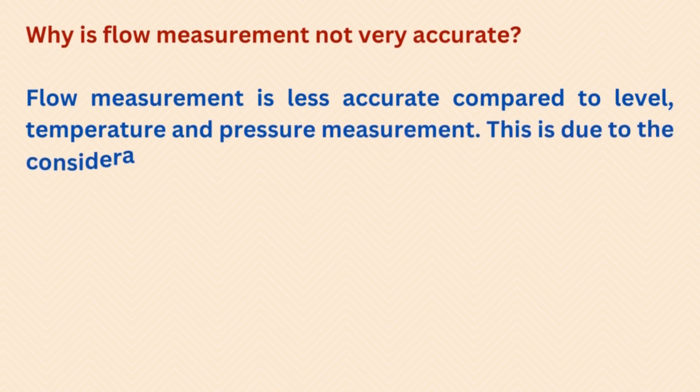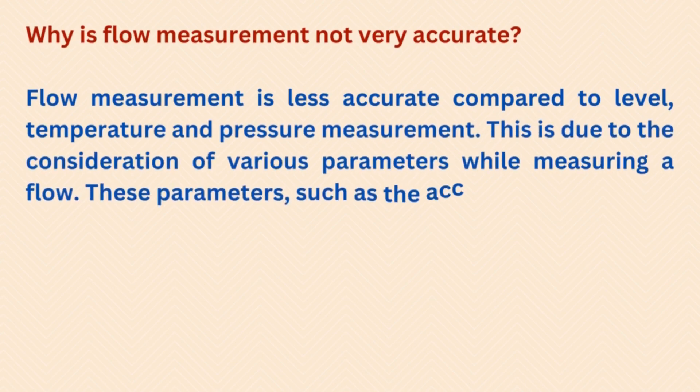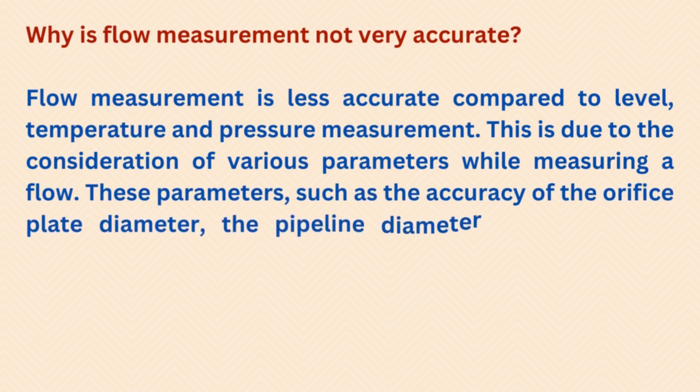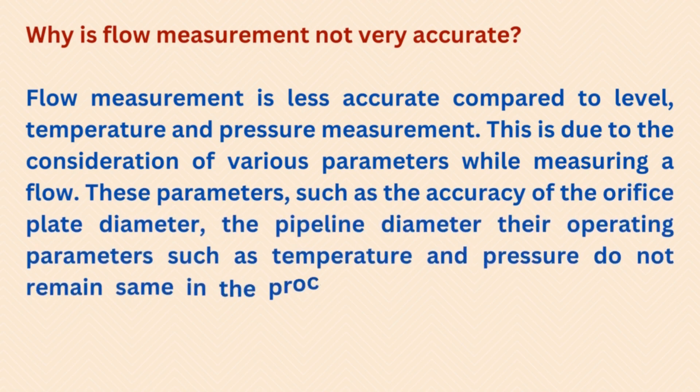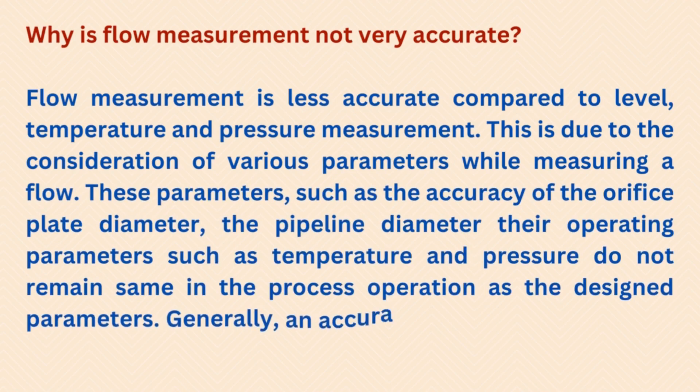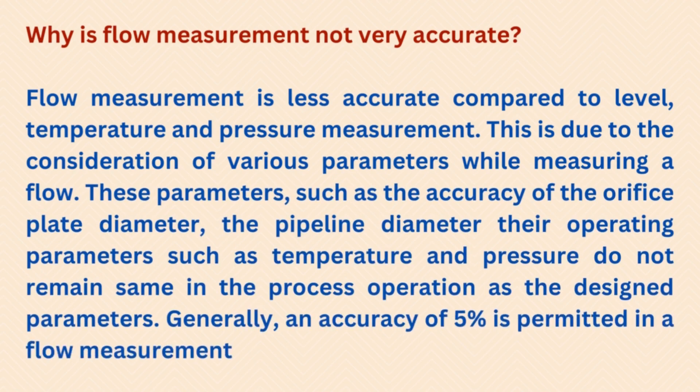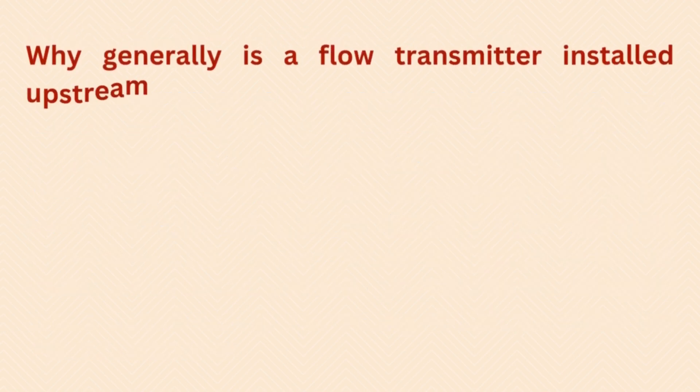Why is flow measurement not very accurate? Flow measurement is less accurate compared to level, temperature, and pressure measurement. This is due to the consideration of various parameters while measuring flow — such as the accuracy of the orifice plate diameter, the pipeline diameter, and operating parameters like temperature and pressure, which do not remain the same as the designed parameters. Generally an accuracy of 5 percent is permitted in flow measurement.